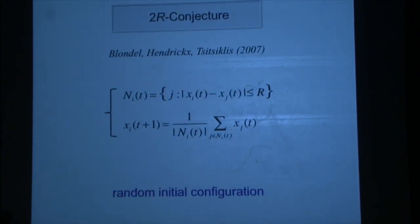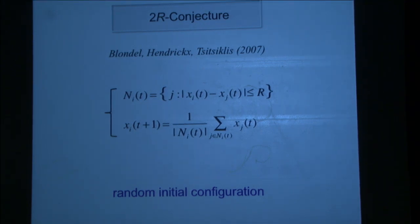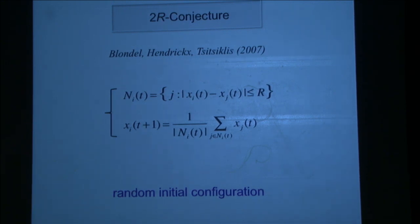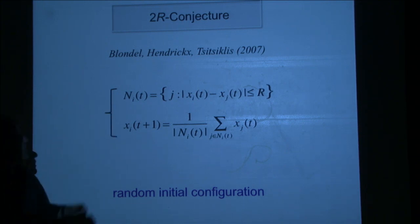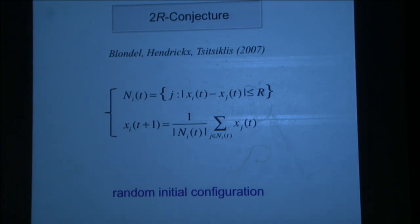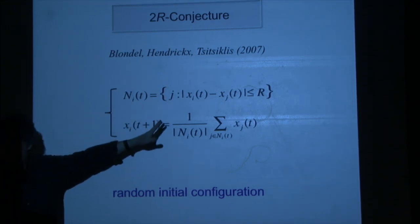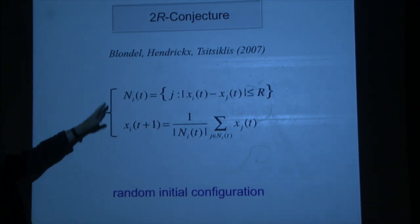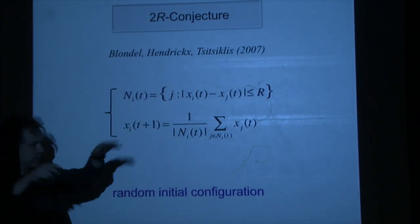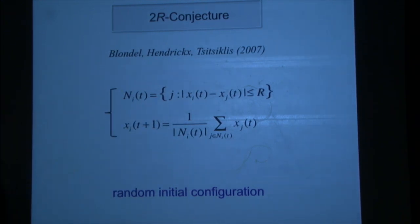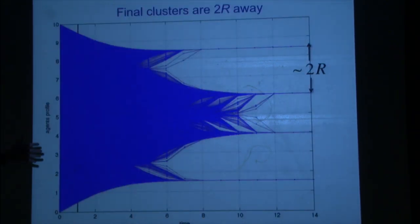It's a very modest result. When you cannot solve a problem that seems very simple, you make it more complicated — that's what we'll do. Before that, there's this conjecture by Blondel, Hendricks, and Tsitsiklis from simulation. Let's go back to the old model: you just move to the average of people within distance r. And then you see what happens.